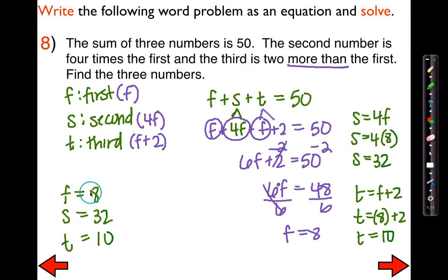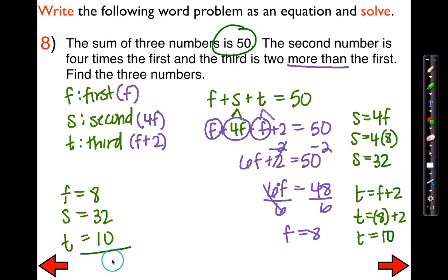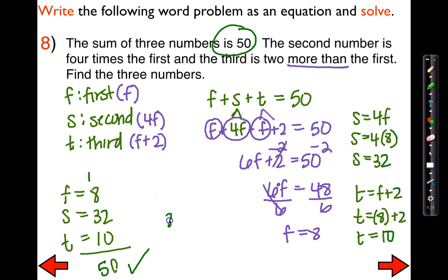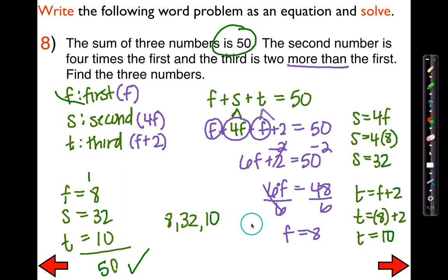Let's check if they all work out. Is the second 4 times the first? Absolutely — 32 is 4 times 8. Is the third 2 more than the first? Yes — 10 is 2 more than 8. Do they have a sum of 50? 8 plus 32 plus 10 — yes, it does check out. So I'm pretty confident the three numbers are 8, 32, and 10.